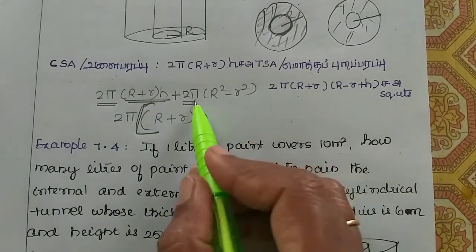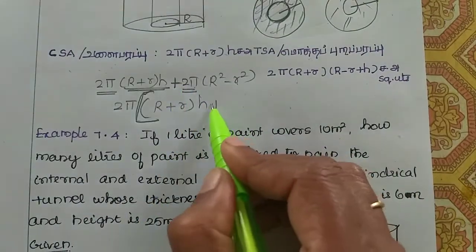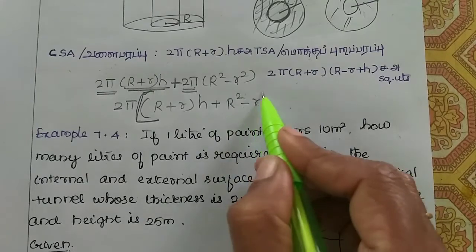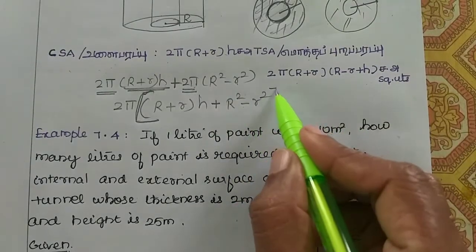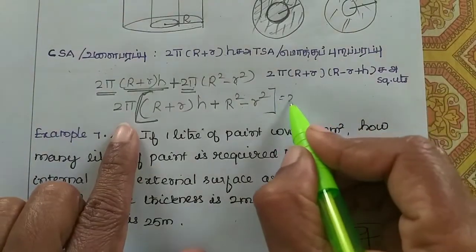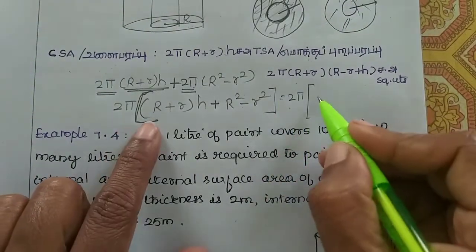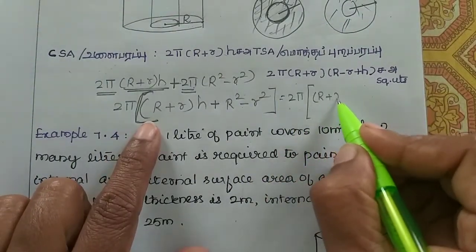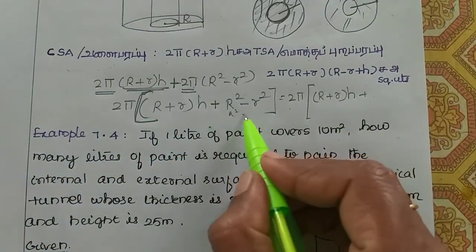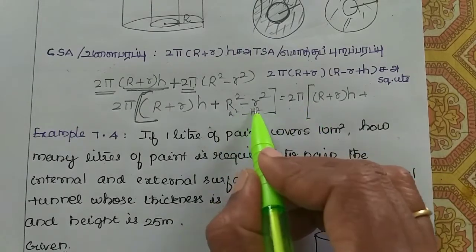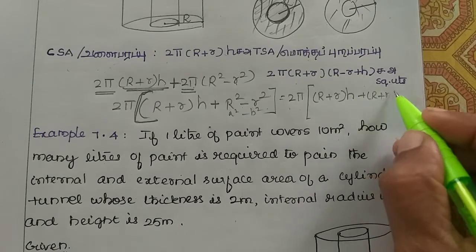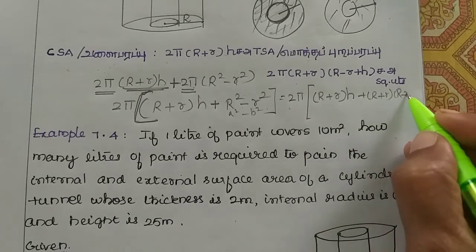So adding both parts, 2π is common. We have 2π into (R + r) h, and then 2π into (R² − r²). Using the identity a² − b² = (a − b)(a + b), we get R² − r² = (R + r)(R − r).